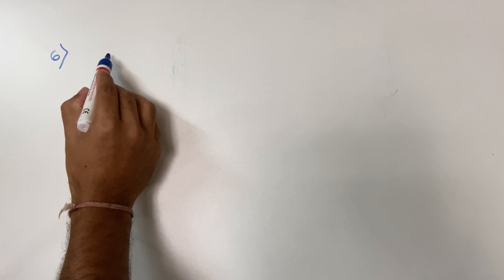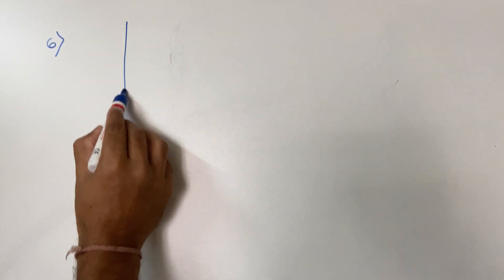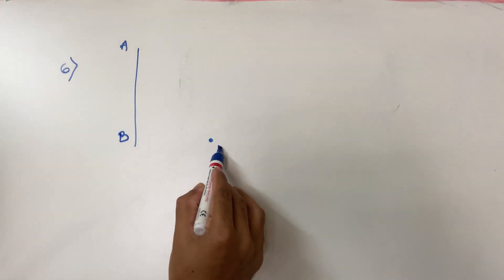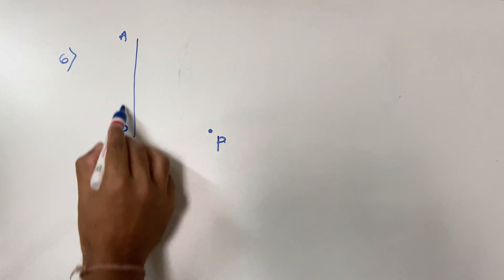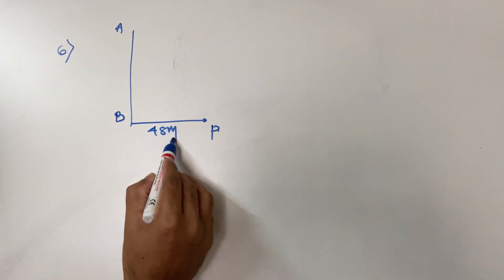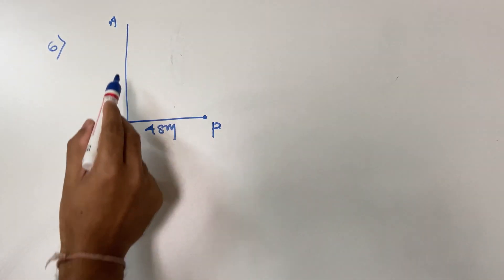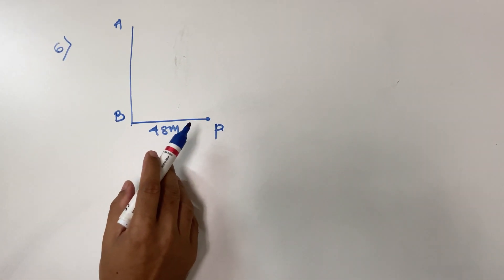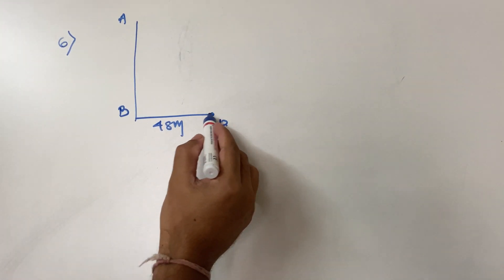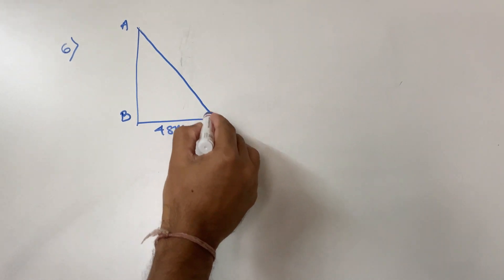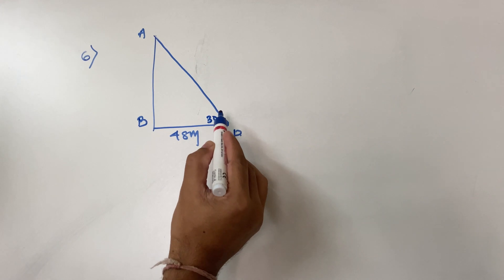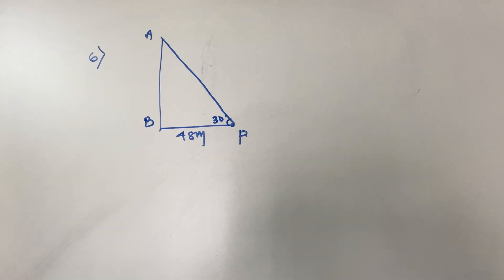A boy is standing at a distance of 48 meters from the building. This is your building and the boy is over here. He is observing the top of the building and the angle made over here is 30 degrees. Find the height of the building.